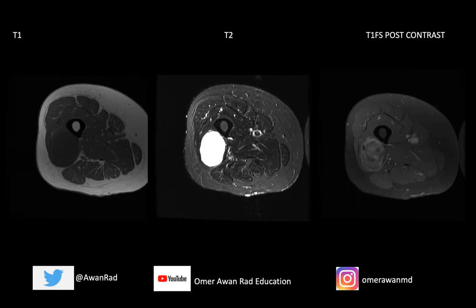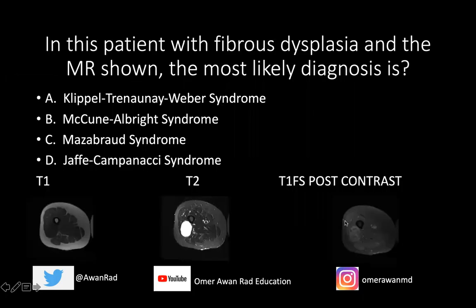There's obviously a lesion within the vastus lateralis muscle. Based on these imaging findings, the question I have for you is: in this patient with known fibrous dysplasia and the MRI shown, the most likely diagnosis is what? Is this Klippel-Trénaunay-Weber syndrome, McCune-Albright syndrome, Mazabraud syndrome, or Jaffe-Campanacci syndrome?